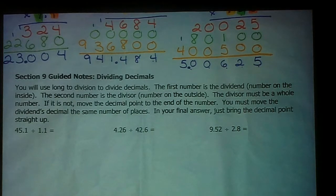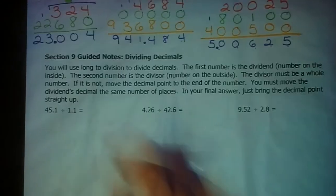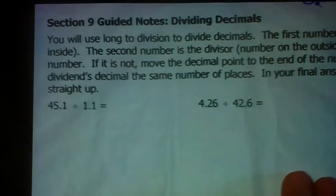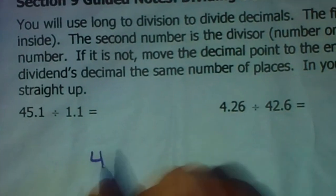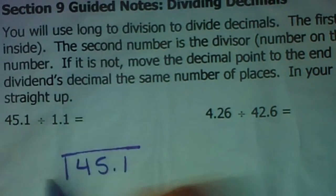In our first problem, we have 45 and 1 tenth divided by 1 and 1 tenth. 45.1 is the dividend. That means it goes inside the division sign. 1.1, the divisor, goes on the outside.